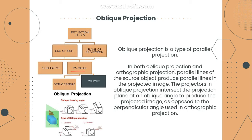Under parallel projections, which is more commonly used because it gives the exact size and shape, we have two kinds: orthographic and oblique. Let's go first to oblique, since it is not commonly used in engineering drawing. In oblique projection, the projectors intersect at an oblique angle to produce the projected image — meaning there is an angle when projecting the drawing, unlike orthographic which is perpendicular at 90 degrees. Oblique angles can be 30, 45, or 60 degrees — anything that is not parallel or perpendicular.